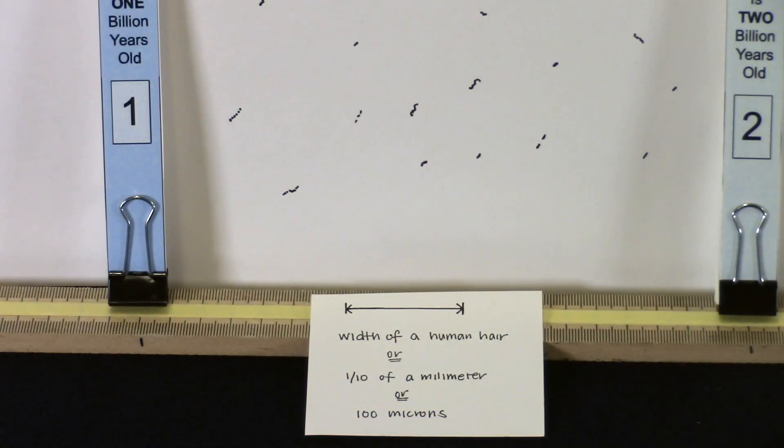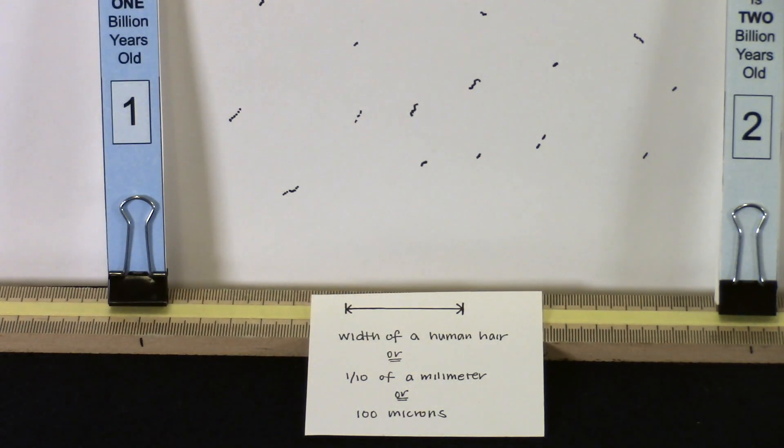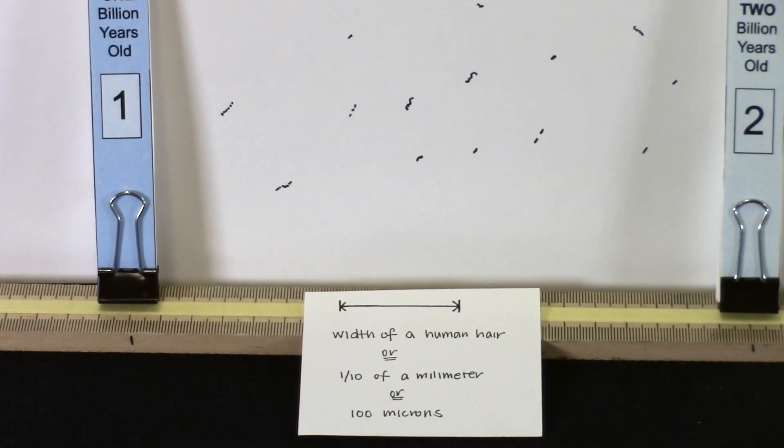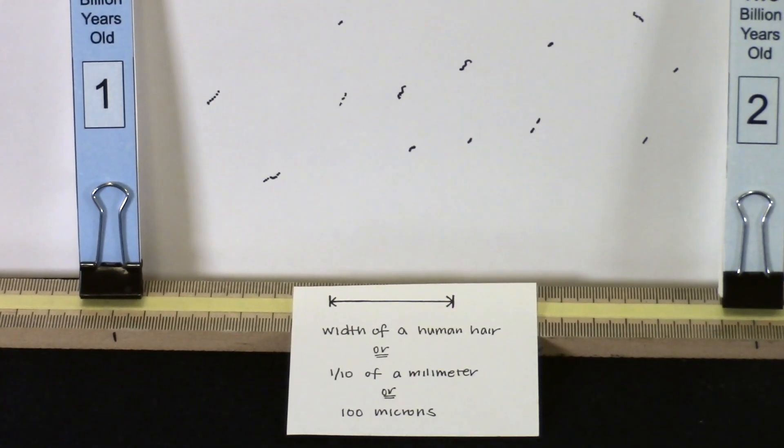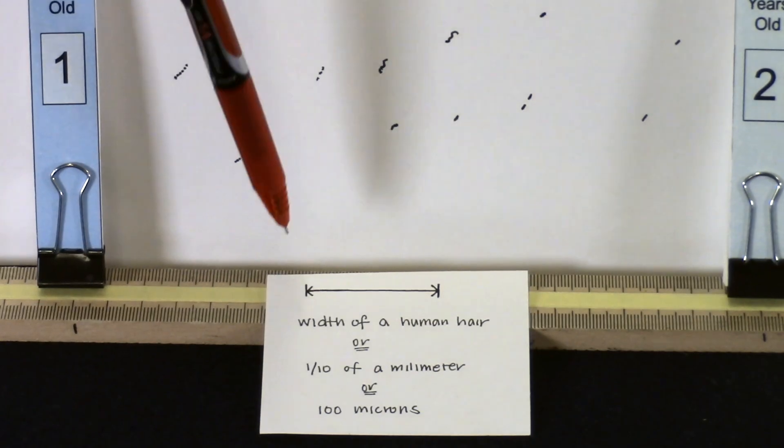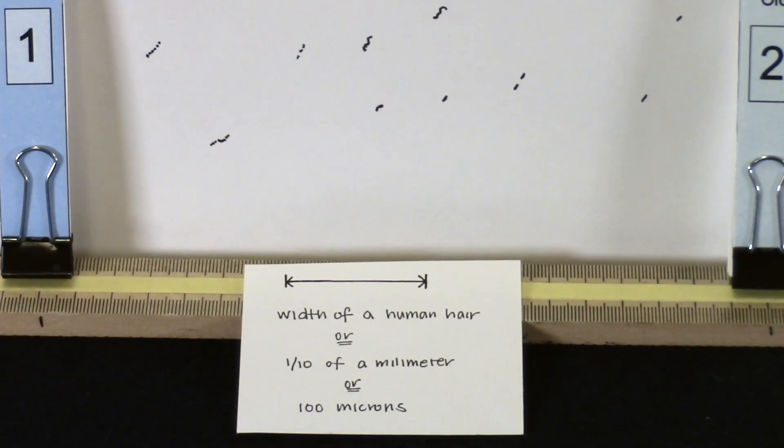When the Earth was about 1 to 2 billion years old, there were a lot of tiny fossils and life was very small. This scale right here shows a line that is about the width of a human hair, or about 1 tenth of a millimeter. Scientists that study really small life divide 1 millimeter into a thousand parts, and each part is called a micron. The scale right here on the card is about 100 microns long.